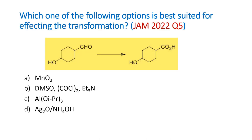Which one of the following options is best suited for affecting the transformation? We see here there is a reactant and a product that is given, and then the reagents are listed in the options. We are asked to find out which of these reagents is suitable to affect this conversion. First, let us look at the starting material and the product.